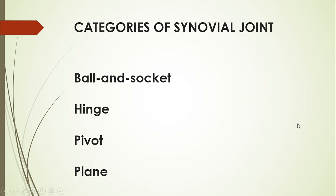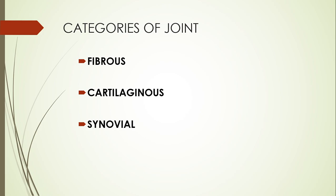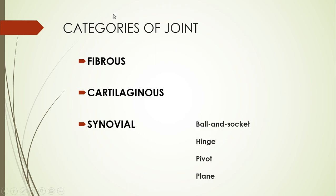Before moving on, I want you to notice that I've talked about two different categories of things. The first was the categories of joints: fibrous, cartilaginous, and synovial. Then there are the categories of synovial joints: ball and socket, hinge, pivot, and plane. Be careful when you get asked a question. If I ask what is the category of a joint, I'm referring to one of these three — fibrous, cartilaginous, or synovial.